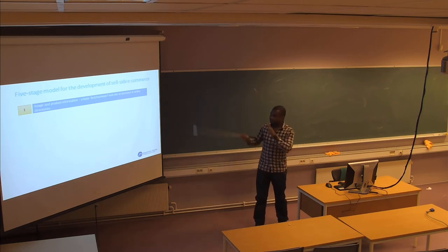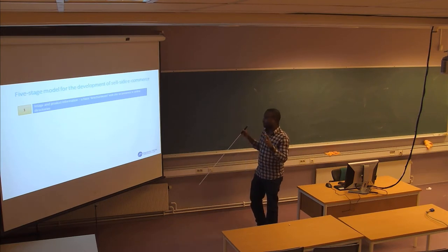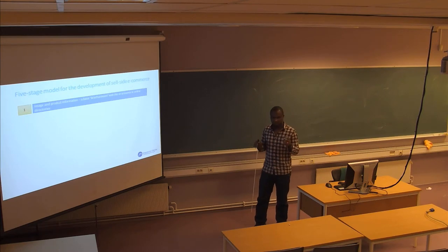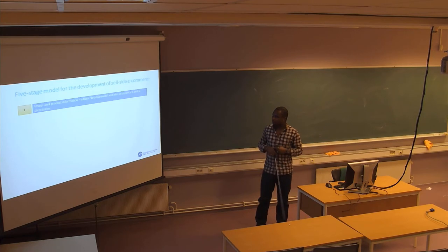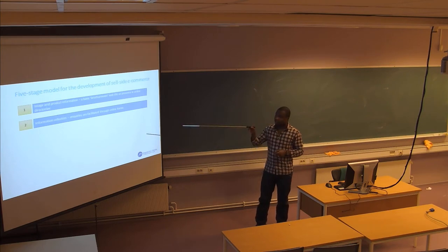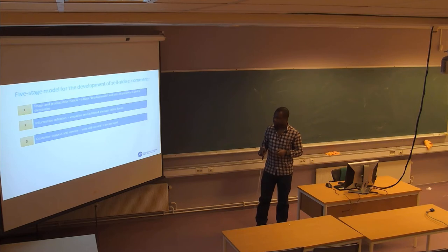This five-stage model helps you assess the technological competence of your business. What the model says is that there are five standard stages an organization can be at, and you assess where you fit. Stage one is image and product information: at this stage, your organization does not even have a website — you have a basic virtual presence where you provide pictures and information about your products that people can find randomly on the internet, but you are not keeping a proper website. Stage two involves a website where customers can get basic information about your products and prices, but they cannot do any transaction with your organization.